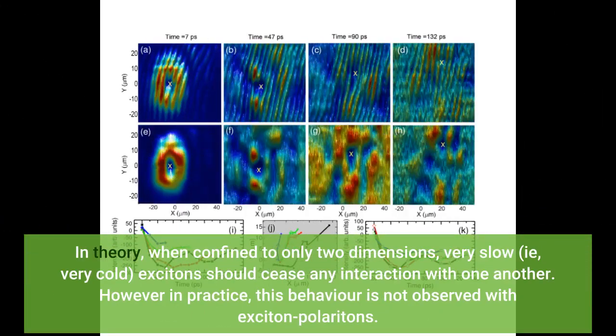In theory, when confined to only two dimensions, very slow (i.e., very cold) excitons should cease any interaction with one another. However in practice, this behavior is not observed with exciton polaritons.